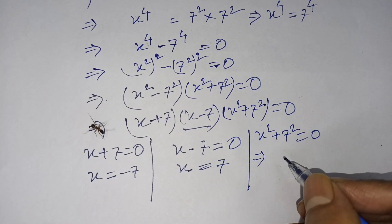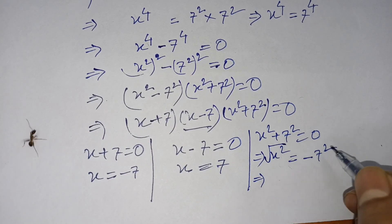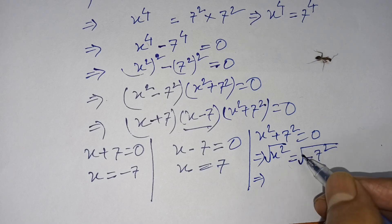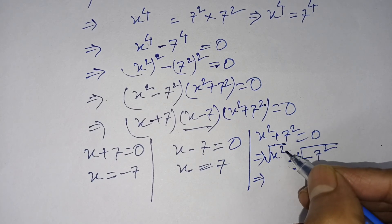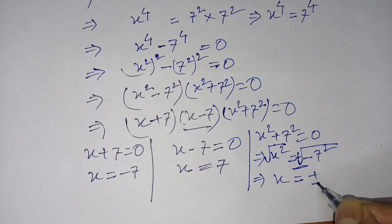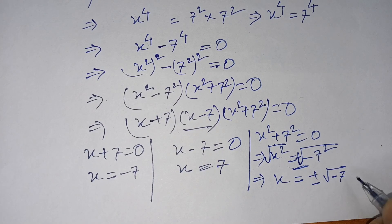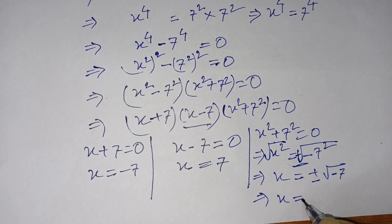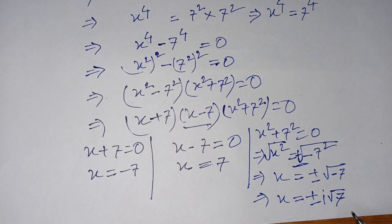Then I can write x squared is equal to negative 7 squared. I use square root on both sides, so x is equal to plus or minus the square root of negative 49. This gives a complex number, so x is equal to plus or minus i times the square root of 7, multiplied — that is, plus or minus 7i. This is our third and fourth answer.